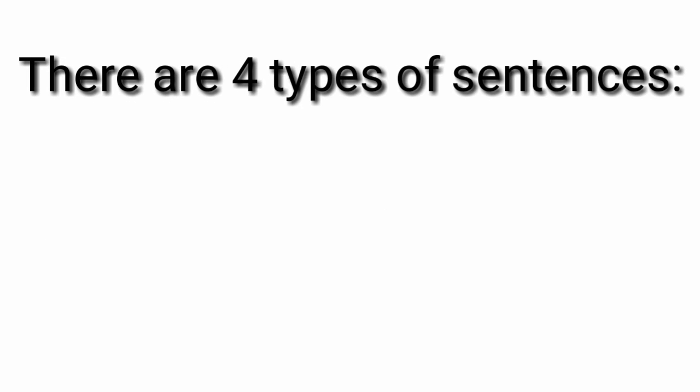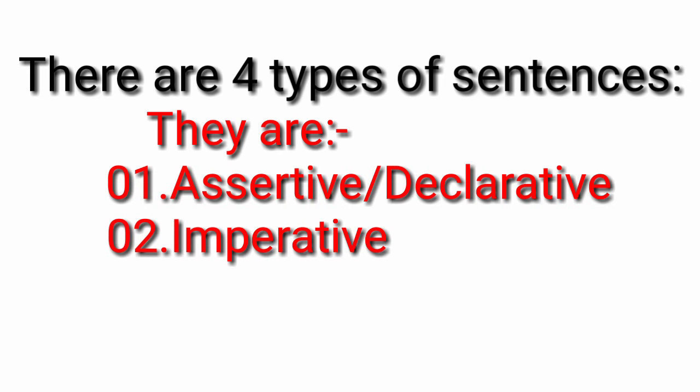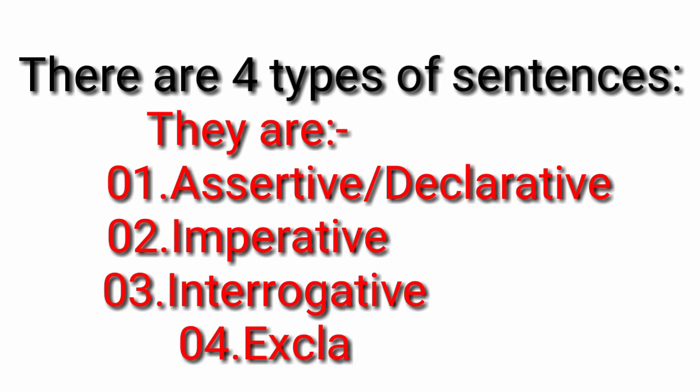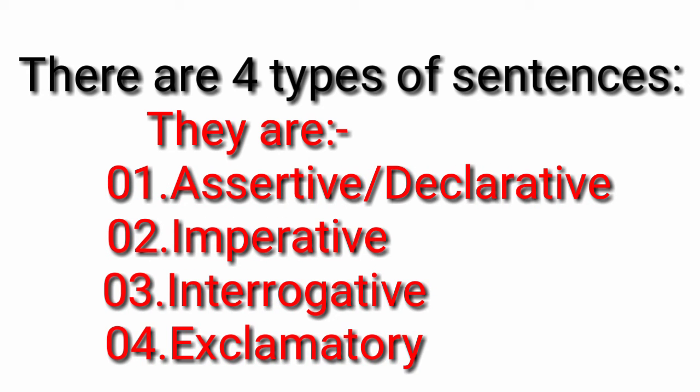There are four main kinds of sentences. They are declarative or assertive sentences, imperative sentences, interrogative sentences, and exclamatory sentences.